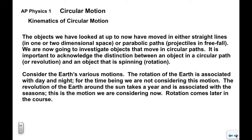Until now, the objects we've looked at have moved in either straight-line paths in one or two dimensional space, or parabolic paths in the case of projectiles. Now we're going to look at objects that move in circular paths. It's important to acknowledge the difference between an object that is moving in a circle or revolving around something else and an object that is spinning. We're not going to be looking at rotation just now — that will come later in the course.